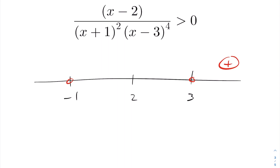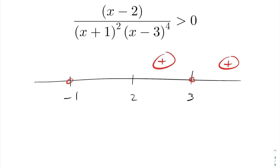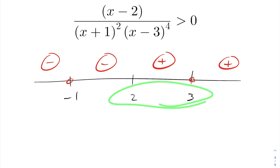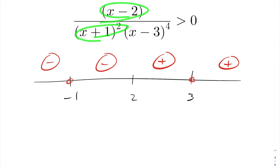As we approach three, the even multiplicity means the expression bounces off that value and remains positive — it doesn't change sign. Moving to between two and three: the multiplicity on that factor is odd, so the sign changes to positive in that sub-interval as well. You can verify by substituting a value like two and a half — you get positive, positive, and because of the power of four, the result is still positive.